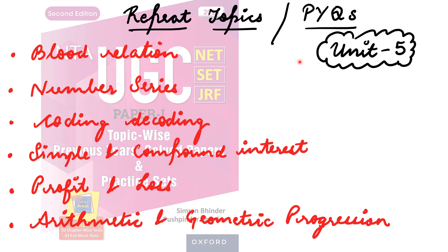For Unit 5 — Maths and Reasoning — you must practice previous year questions thoroughly. Important topics include: blood relation, number series, coding and decoding. For mathematics: simple and compound interest, profit and loss, percentages, ratio and proportion, time and distance. These are highly important. Also prepare arithmetic and geometric progression from Unit 5.